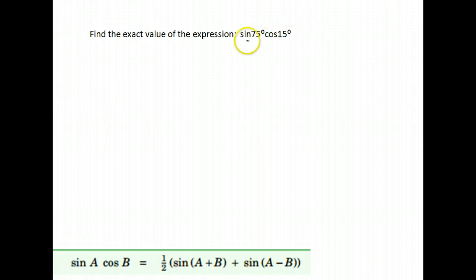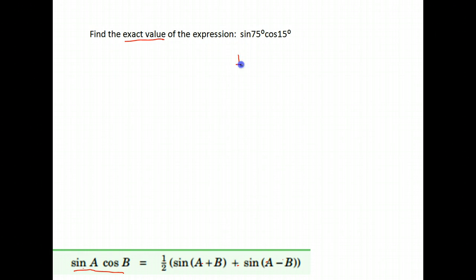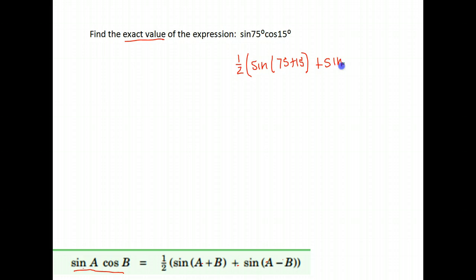Here is another product: sine 75 times cosine 15. Since it wants the exact value, we know we're probably going to have to use an identity rather than just putting it in our calculator. There is an identity for when you have the sine of an angle times the cosine of another: it is one-half times the sine of the angles added together, plus the sine of the angles subtracted — first minus second. So that gives us one-half of the sine of 75 plus 15, plus the sine of 75 minus 15.